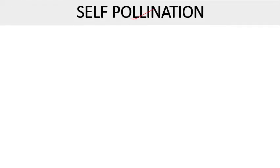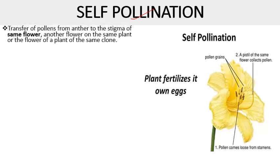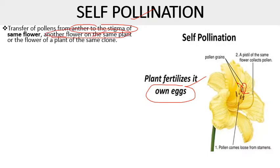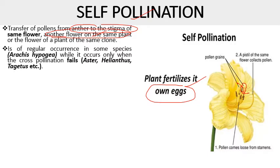Self-pollination, as the name indicates, is the transfer of pollen grains from the anther to the stigma of the same flower — the plant fertilizes its own egg. Another case is where pollen moves to another flower on the same plant, which is known as geitonogamy. A regular occurrence of self-pollination is seen in some species like Arachis hypogaea, that is peanut. In other plants like Aster, Helianthus, or Tagetes — members of family Asteraceae — it occurs only when cross-pollination fails.